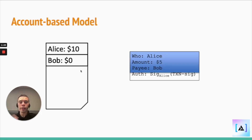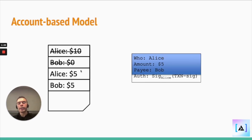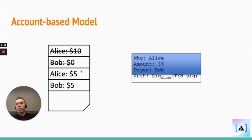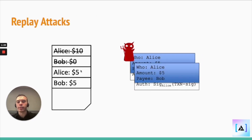So here Alice has $10. She sends Bob $5. So in the account state model, it just updates both of their users' overall balance to reflect the change post the transaction.